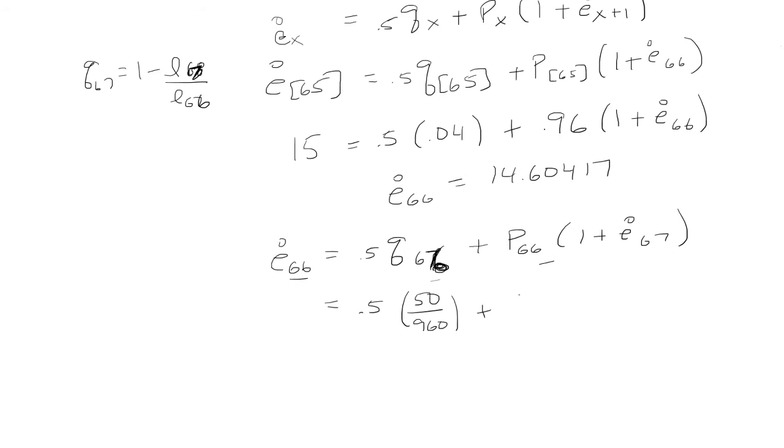Plus now the probability of surviving age 66 is 1 minus the probability of dying which is 910 over 960, and it's 1 plus, now I don't know what this one is so I'll just leave it alone. And E66 is 14.60417. Doing some simplifying we get that this is 14.37912.